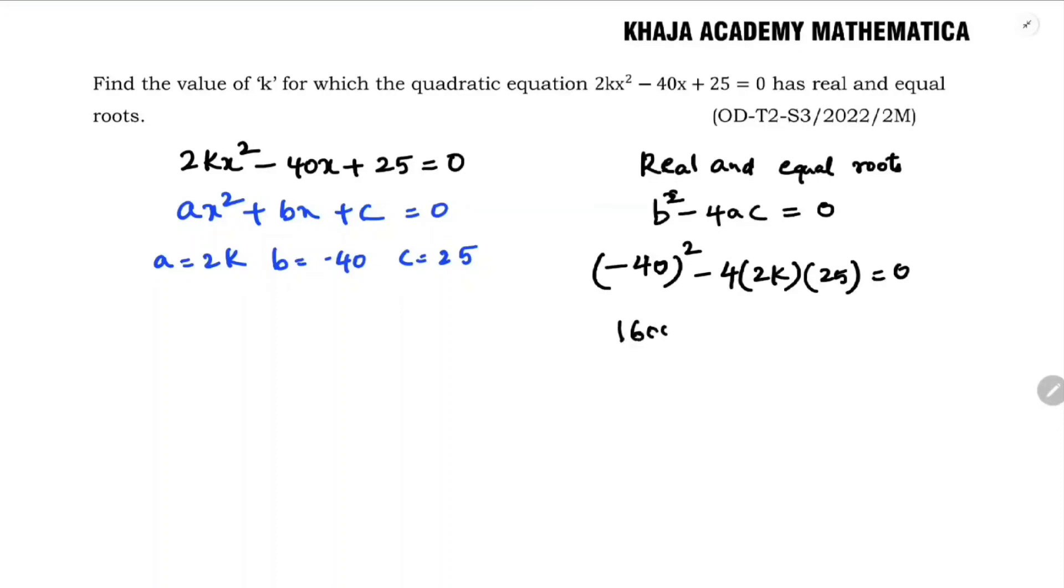so 1600 minus 4 into 2k into 25, so it is 200k. So 1600 = 200k.